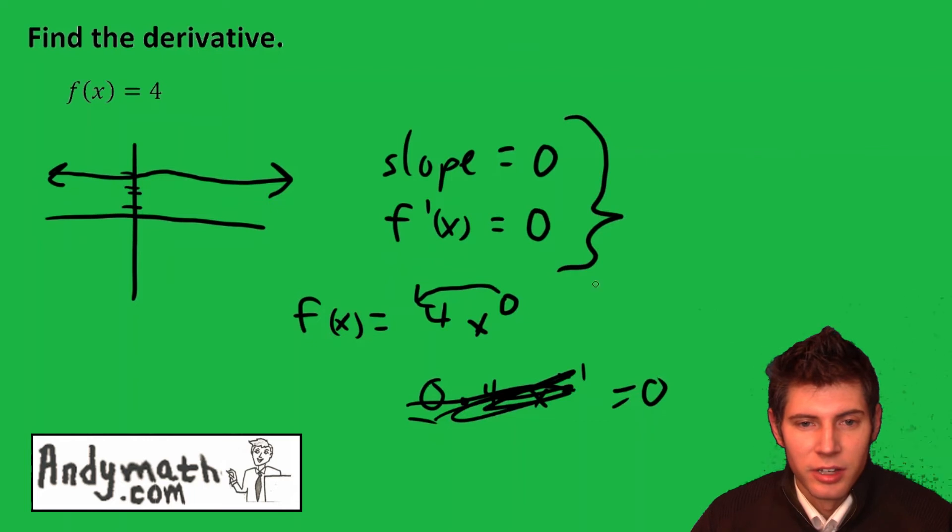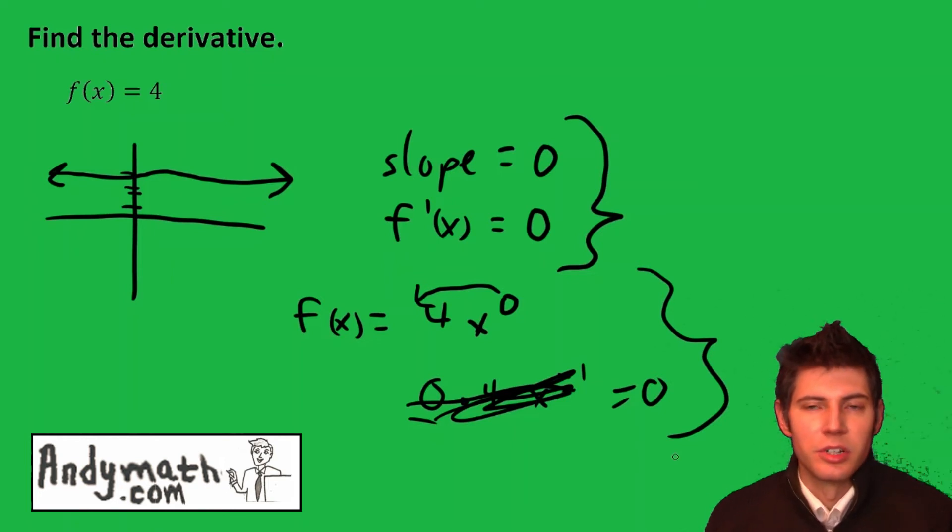There's two ways to think of it: what is the slope of a horizontal line, or think of it as x to the 0, which just makes it go away.